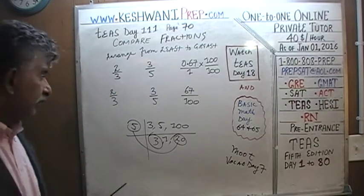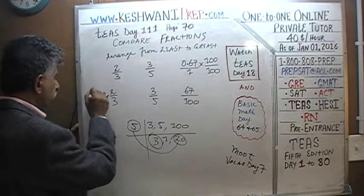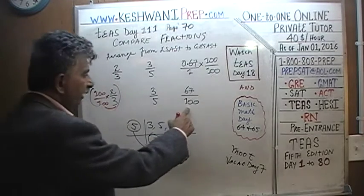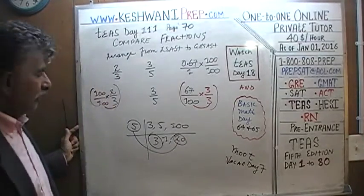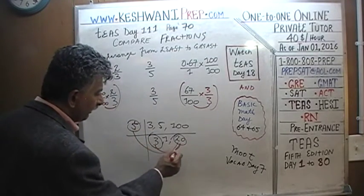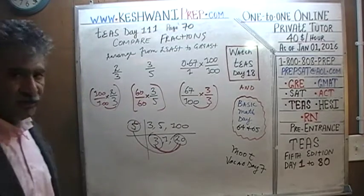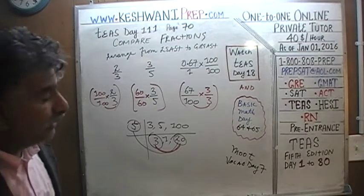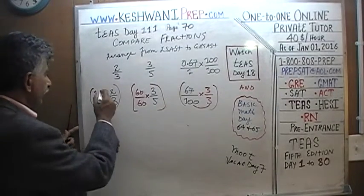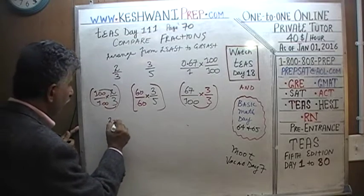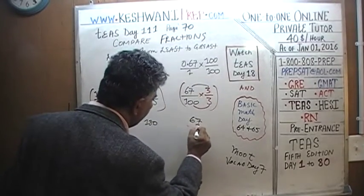What can we multiply 3 by to convert it to 300? Multiply top and bottom by 100 — now we have a denominator of 300. Here we have 100. What can we do with 100 to convert it to 300? Multiply top and bottom by 3 — now we have a denominator of 300. Here we have 5. We need to multiply by 60 over 60, since 3 times 6 is 60, and 60 times 5 is 300. Everybody has a denominator of 300. Now we just look at the numerators: 100 times 2 is 200, and 60 times 3 is 180.